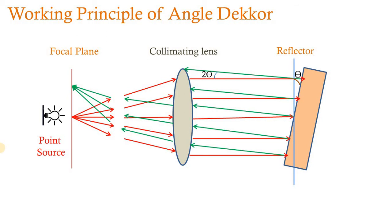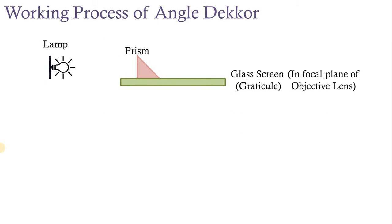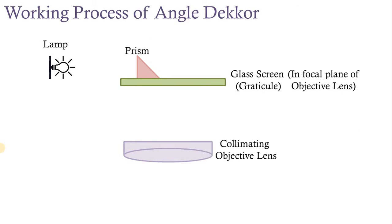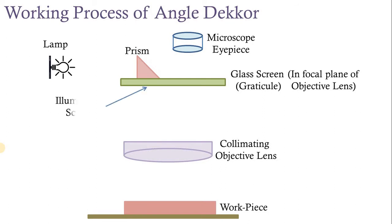Now the working process of the angle decker. The equipment used includes a lamp, then a prism — a constant-position prism or double prism — which reflects all incoming light at a right angle. This prism is kept at a glass screen in the focal plane of the objective lens. Then there is a collimating objective lens, and the workpiece is kept on a surface plate. The glass screen has two scales.